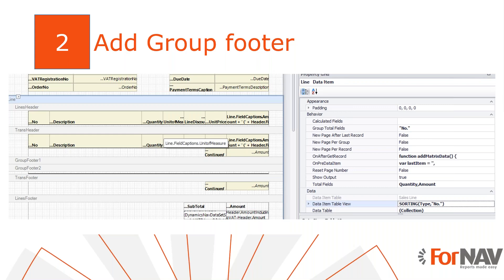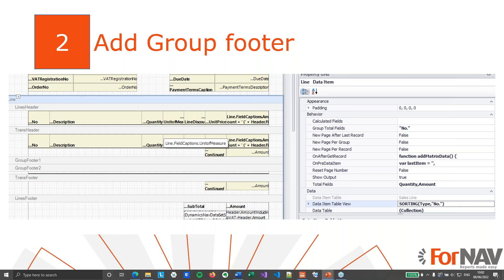The first thing we need to do when we want to display a matrix table is to group the individual lines together. We need a single dynamic line per item. We'll use a group footer for this. So let's go to Business Central.